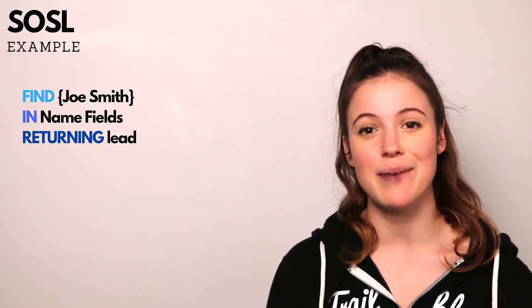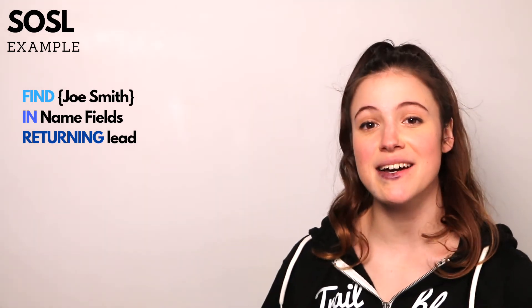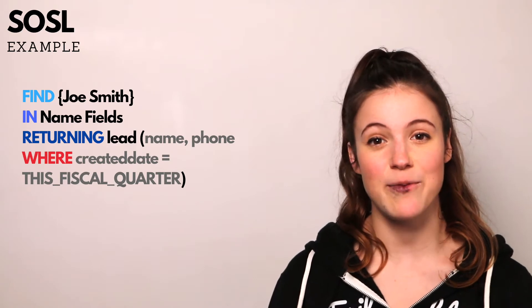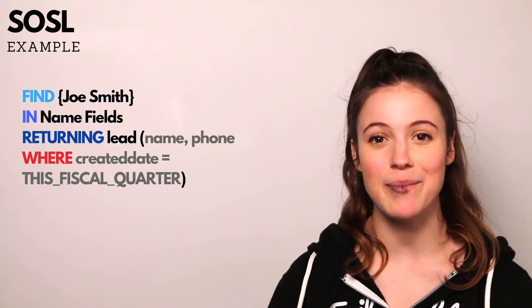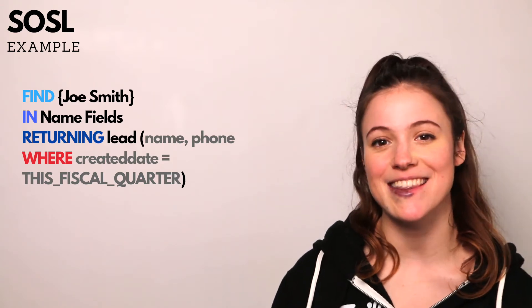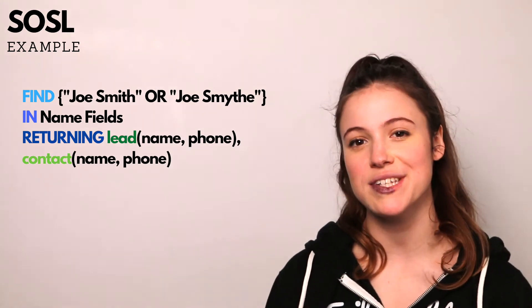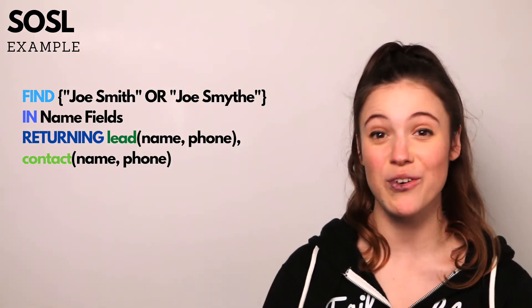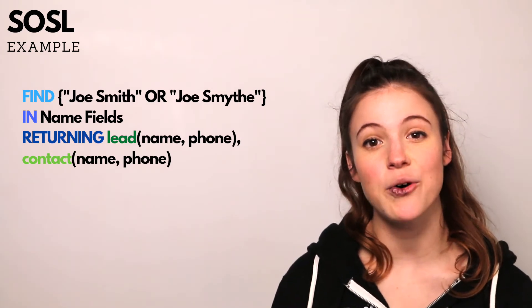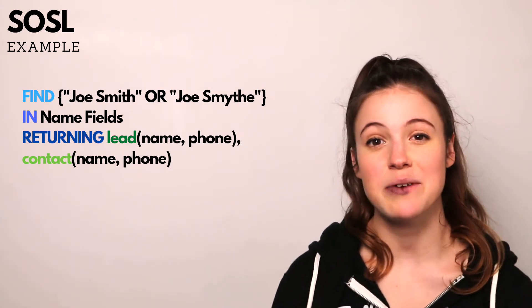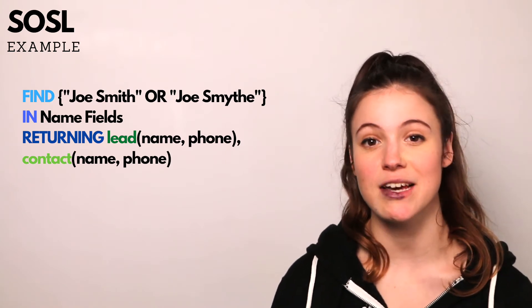In this example, we're looking for John Smith in the name field of any lead objects. This will return the IDs of any leads that have the name Joe Smith. We're doing exactly the same thing here, but instead of just returning the ID, we're also returning the name and the phone fields. Building on our last query, we're looking for Joe Smith in the name fields of all leads and returning the name and the phone, and only leads that were created in the current fiscal quarter. We can also use the OR statement to look for John Smith spelled like this or this. Here we're also returning a lead or a contact, but if there was an opportunity called Joe Smith with either of those spellings, it would not be returned.